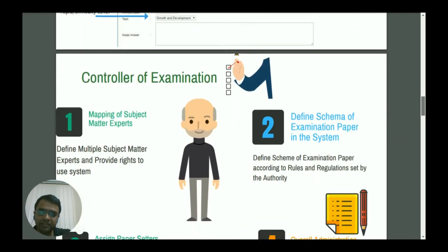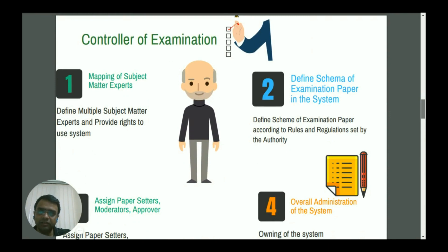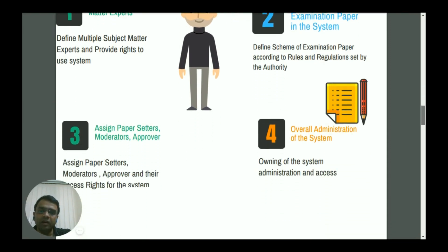The next crucial entity is the controller of examination. The controller of examination has various responsibilities like mapping of the subject matter expert. The COE can define the schema of the examination paper in the system, assign approvers, question paper setters, or moderators, and has overall administration and control of the system.